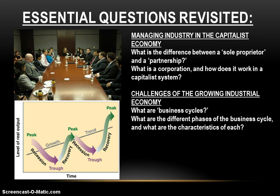That looks like a good stopping point for today. We looked at two things: managing industry in the capitalist economy — the differences between a sole proprietorship, a partnership, and a corporation, especially how corporations are managed — and then the challenges of growing the industrial economy through business cycles: the growth phase, the decline phase, and if things get really bad, the depression. Those are the essential questions, guys. It's what we covered today, and it's what you need to be ready to talk about next time. Until that time, I bid you farewell.